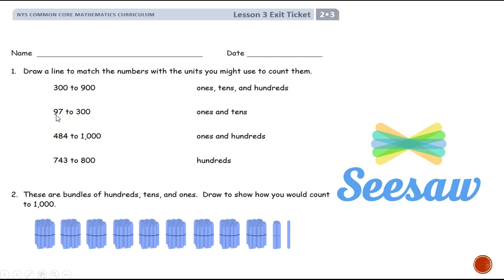If you're counting from 97 to 300, which of these would you use? If you're counting from 484 to 1000, which one would you use? If you're counting from 743 to 800, which of these would you use?